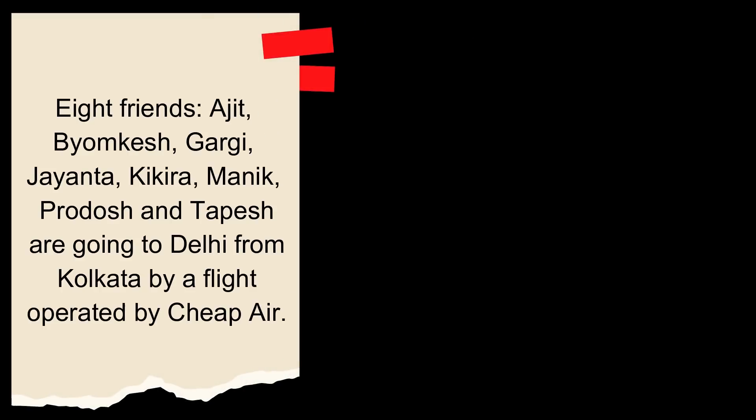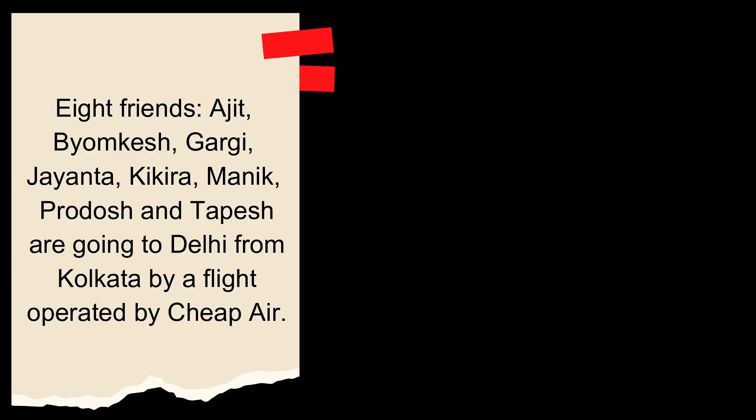Eight friends, Ajit, Byomkesh, Gargi, Jayanta, Kikira, Manek, Prados and Tapesh are going to Delhi from Kolkata by a flight operated by Cheap Air. The only thing that's there in my head is that all the names are starting with a different letter. So, I can simply write them like this. Let's move on.